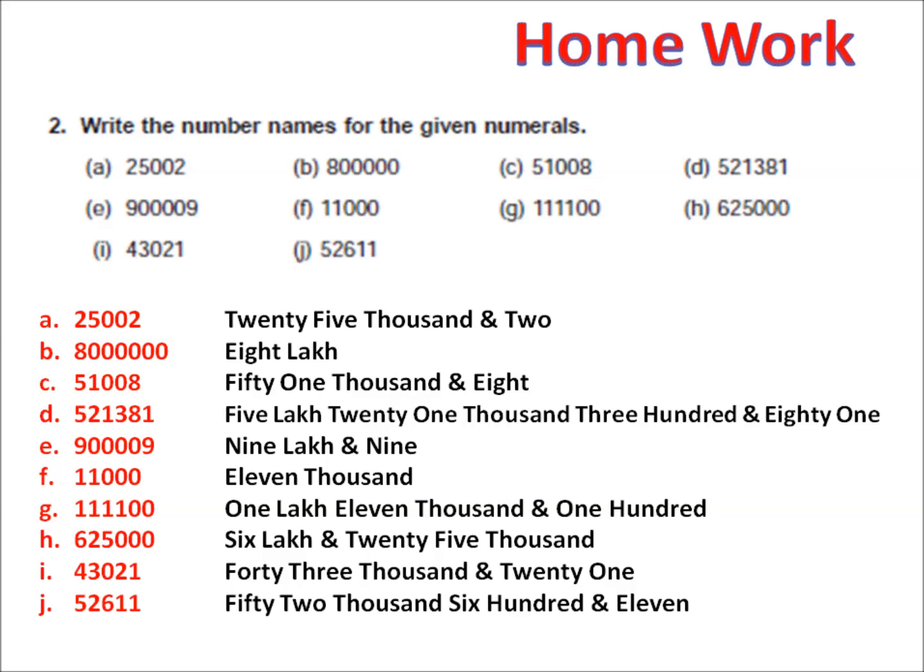A. 25,002. B. 8,00,000. C. 51,008. D. 5,00,21,381. E. 9,00,9. F. 11,000. G. 1,00,11,100. H. 6,00,25,000. I. 43,00,21. J. 52,611.